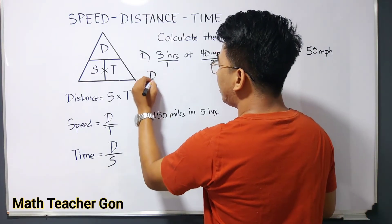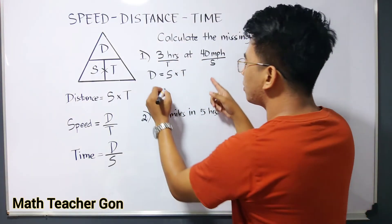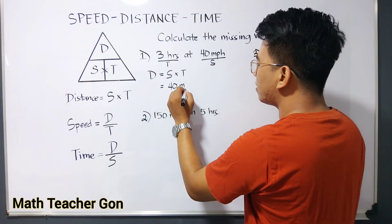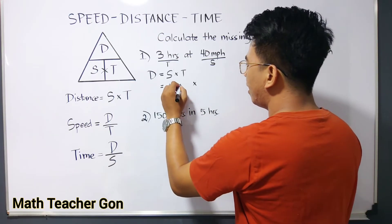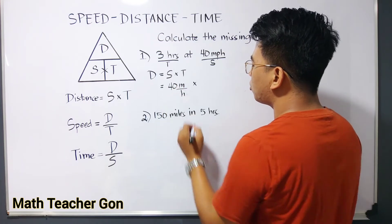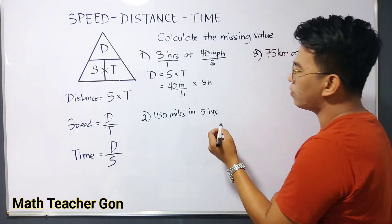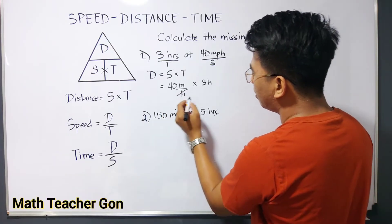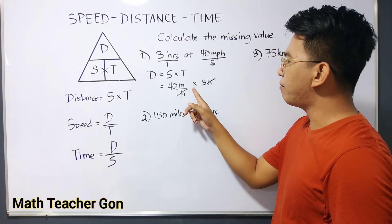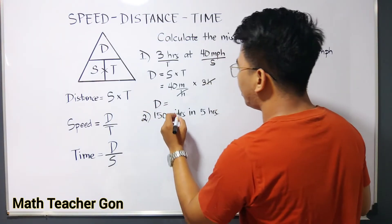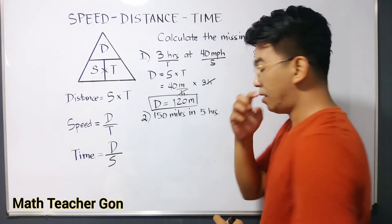So using the formula D is equal to speed times time, we will substitute the value of your speed, which is 40 miles per hour, times, or we can write it as M over H, times your time, which is 3 hours. Multiplying this, we can easily eliminate your hours unit. So as you can see, what will remain here is simply 40 meters times 3. And the answer is simply 40 times 3, that would be 120 meters. This is the answer for item number one.